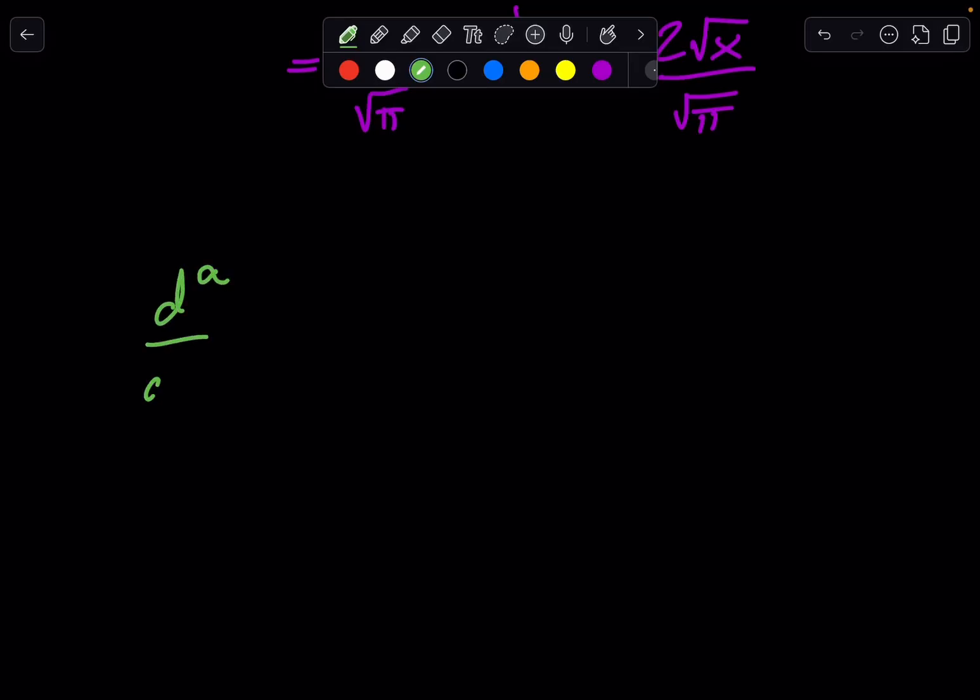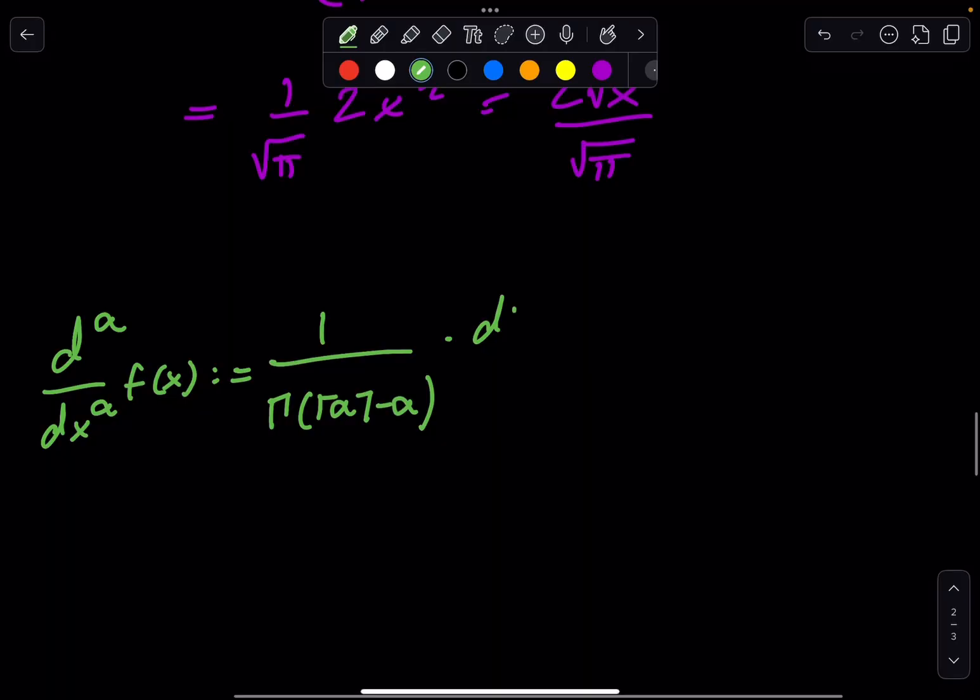So this power actually is referring to the order of the derivative, not really a power. So the generalized formula that Riemann created is as follows. d^α/dx^α of f(x) is defined to be, which is what that colon means in the equal sign again, of 1 over the gamma function of the ceiling of α minus α, a lot of alphas, times the ceiling of α-th derivative, really funny wording here, d^(⌈α⌉)/dx^(⌈α⌉).